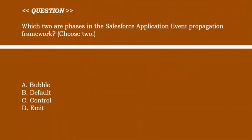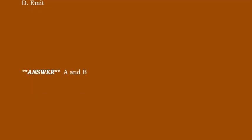Which two are phases in the Salesforce application event propagation framework? Choose two options. Option A: bubble. Option B: default. Option C: control. Option D: emit. Correct answer is Option A and Option B.